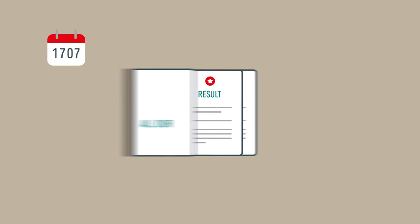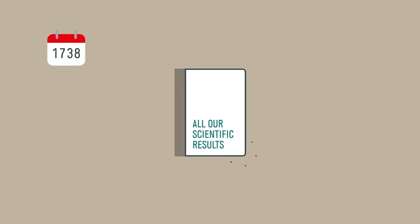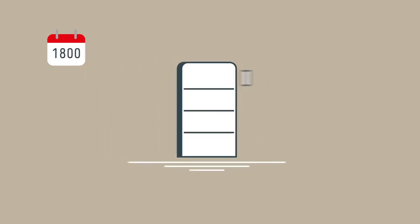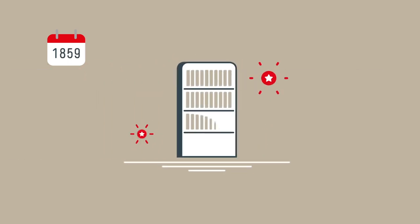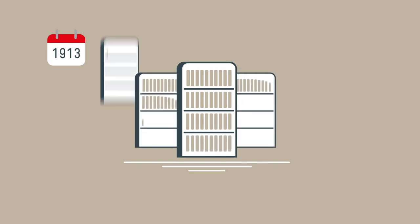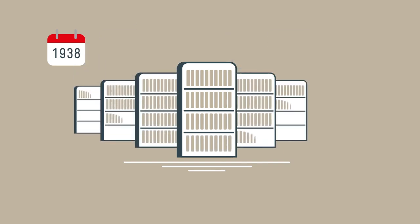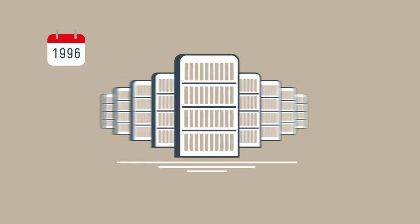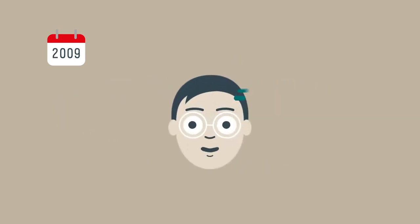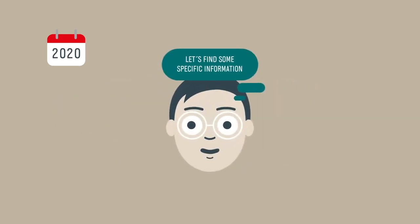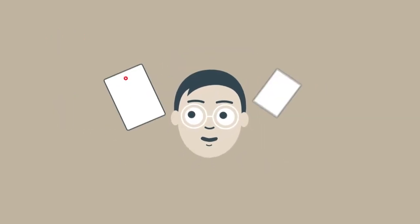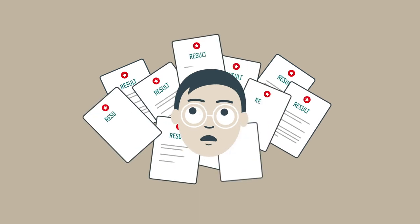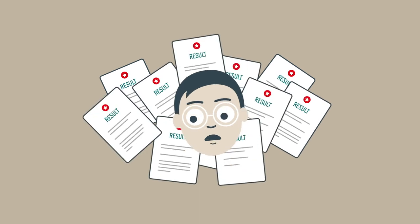A 17th century researcher would have been able to read the whole scientific canon. But this is no longer feasible. Even in narrow research fields, it is difficult to gain a comprehensive understanding of the relevant literature. This is how research exchange works today — researchers are drowning in a flood of pseudo-digitized PDF articles.